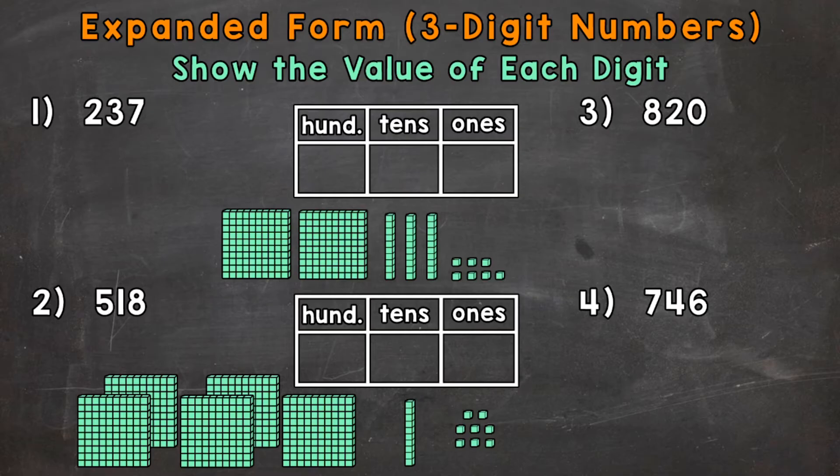So let's jump into number one where we have 237. Now the first thing we're going to do is take a look at the digits of this number by putting the digits in a place value chart. This is going to help us understand what the digits of this number really mean. So we have a 2 in the hundreds place, a 3 in the tens place, and a 7 in the ones place.